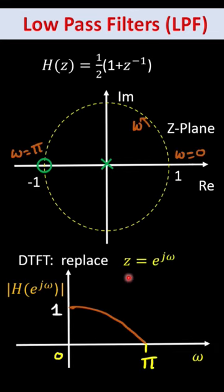For DTFT, we need to replace z with e^(jω), which has magnitude 1 and angle ω. So ω will vary along this unit circle.